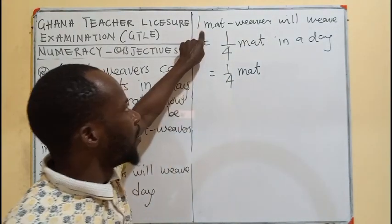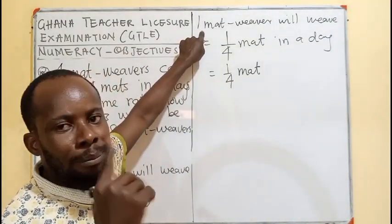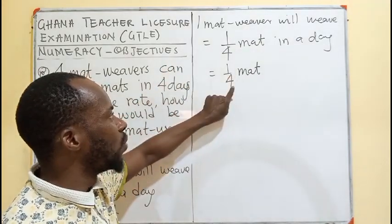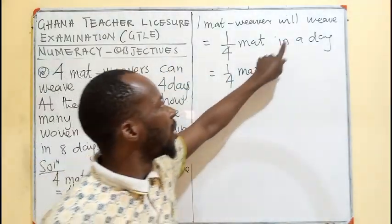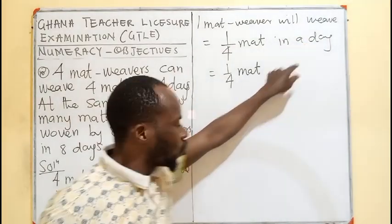This means that one mat weaver, one person, one man, is weaving one quarter mat in what? A day.